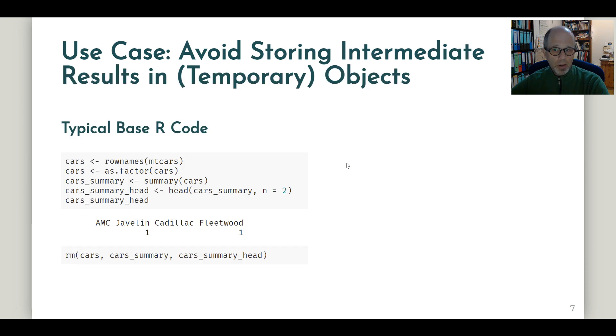The second use case that I want to show you is related to the coding style I also see quite frequently in R. And that is storing intermediate results in objects or in temporary objects in some cases. So to make this easier to follow, I'm using exactly the same example as before. Only this time I avoid the nested parentheses by storing intermediate results in objects. So I look at the row names of the mtcars data set and store this in a vector. Then I convert to a factor and then I create another object. I could have used the same object name again, but now I create a summary object. And then I look at the head of the summary output and print that to the console. So I get the same result as before.